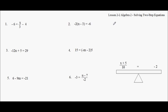Last time we solved one-step equations, and this time we're going to solve two steps — we're going to do two things to solve these. Remember, the equation is like a teeter-totter and you have to maintain the balance. To maintain balance, you either add the same thing to both sides, subtract the same thing, multiply the same thing, or divide the same thing.